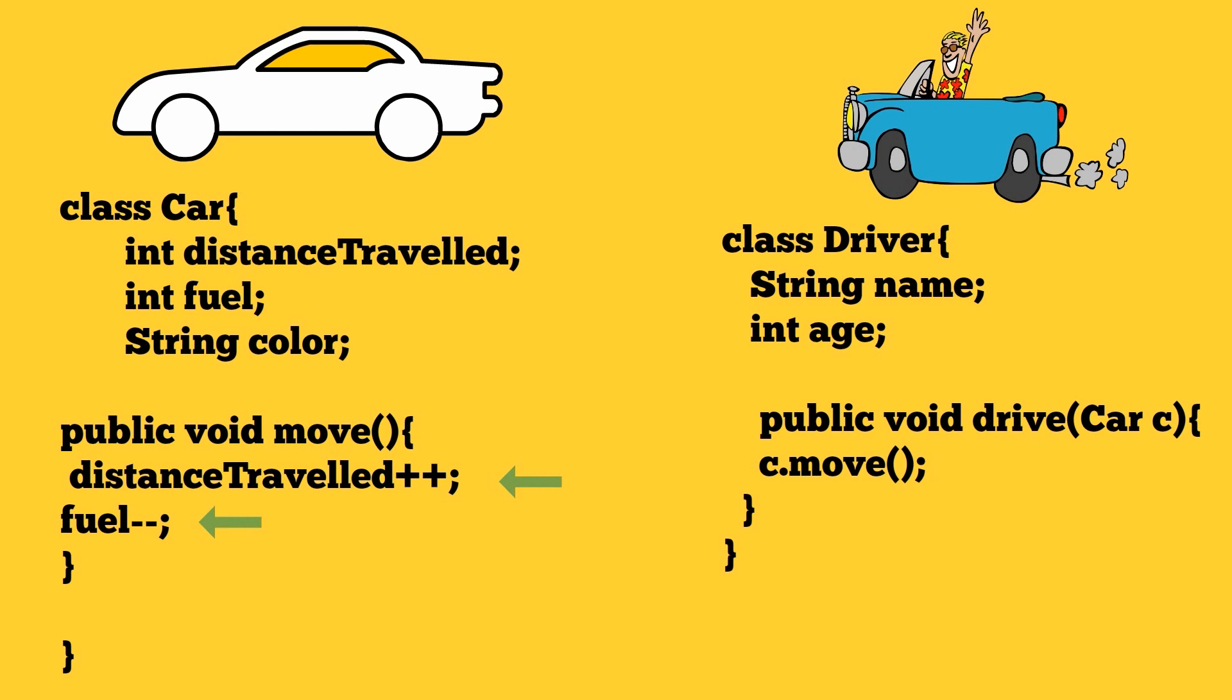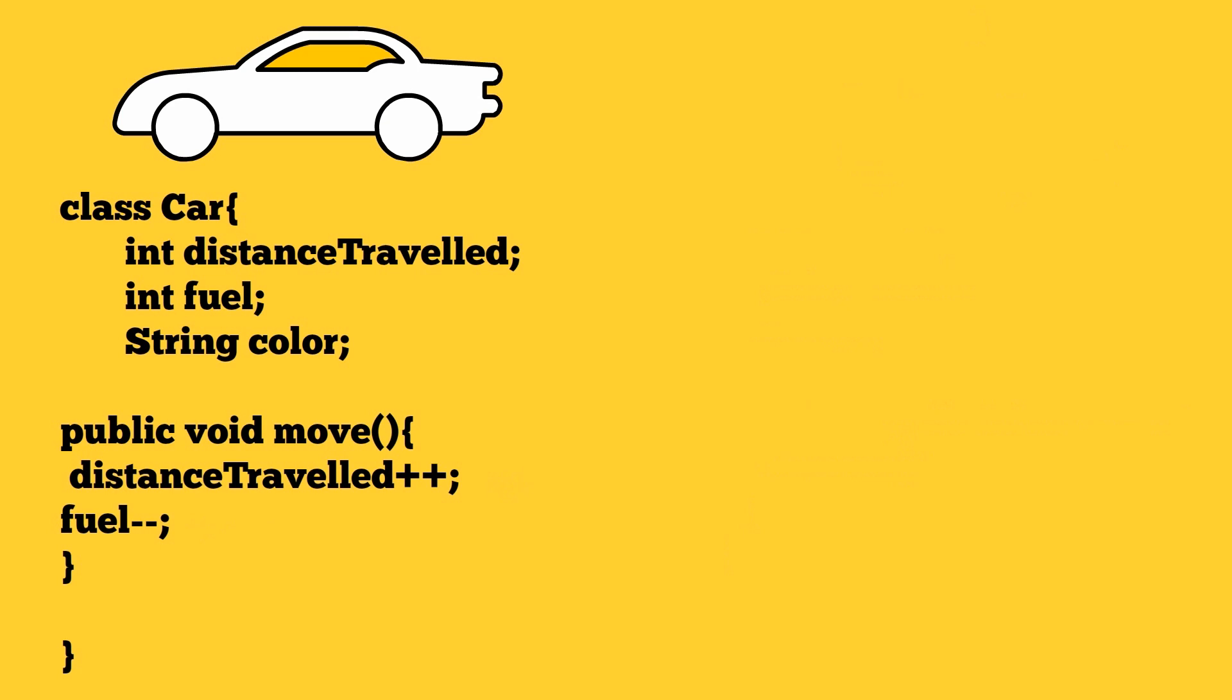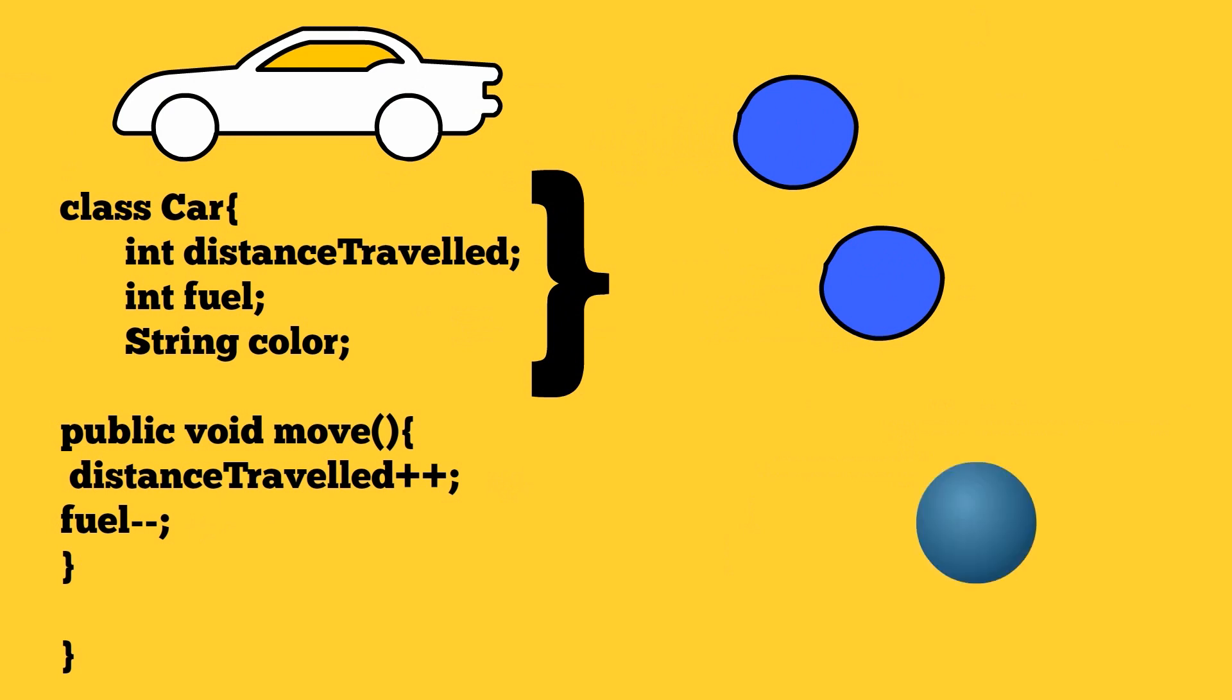But there's something specific we need to notice here. If you closely observe applications developed in oops concept, what you can infer is that when applications are being used, the state of the objects are getting updated, new instances are created and some old instances are getting garbage collected. So the primary thing that is happening here is that the state of the objects are updated by methods.